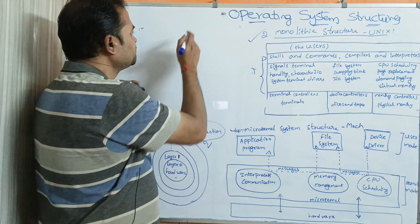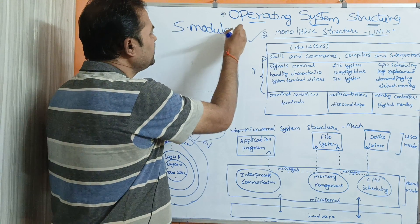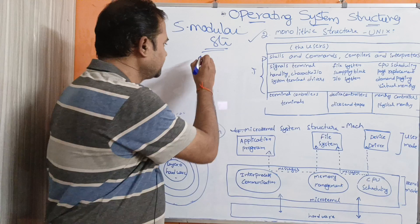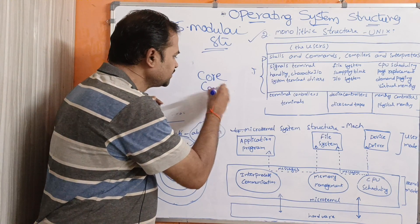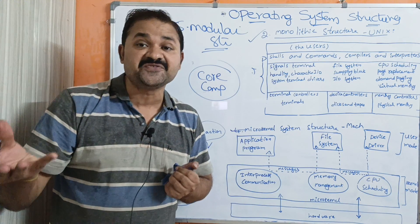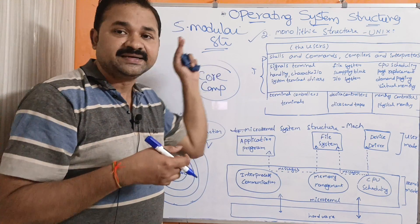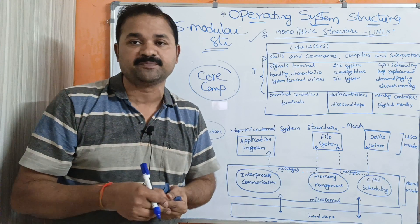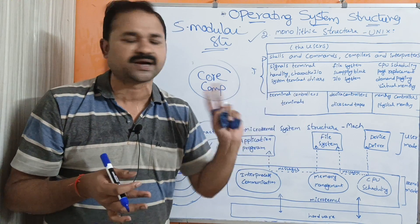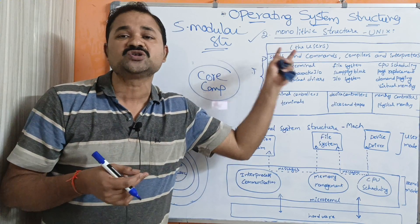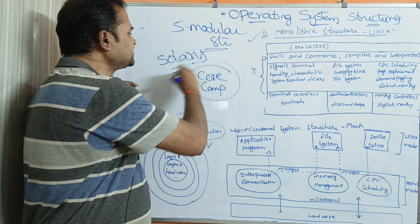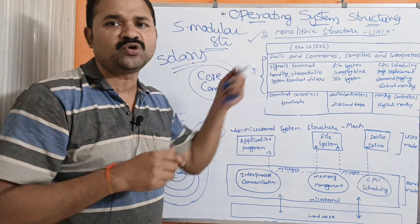To overcome these problems, the latest structure is the modular structure. In this structure, the operating system kernel contains core components — the necessary important components — and the remaining modules are added dynamically at runtime or boot time. This is the most efficient approach. The best example for modular structure is Solaris. This concludes the discussion of operating system structures.